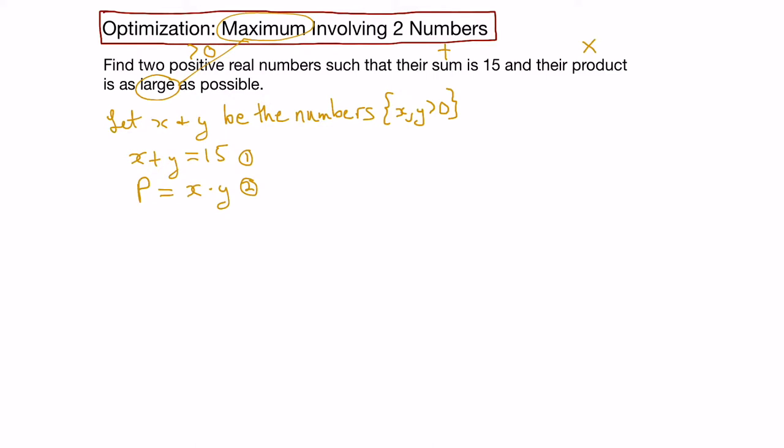Before we get into calculus to solve the problem, let's look at it logically. I'll set up a table where we have x, y, their sum x plus y, and their product x times y. We'll pick a number greater than 0 for x, let's say 1. If their sum is 15, y would have to be 14, and their product would be 14.